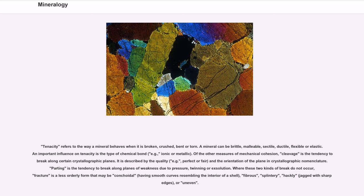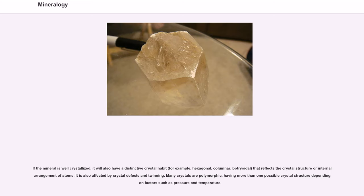Where cleavage and parting do not occur, fracture is a less orderly form that may be conchoidal — having smooth curves resembling the interior of a shell — fibrous, splintery, hackly with jagged sharp edges, or uneven. If the mineral is well crystallized, it will also have a distinctive crystal habit, for example hexagonal, columnar, or botryoidal, that reflects the crystal structure or internal arrangement of atoms. It is also affected by crystal defects and twinning. Many crystals are polymorphic, having more than one possible crystal structure depending on factors such as pressure and temperature.